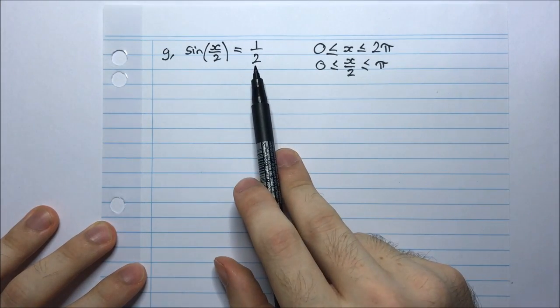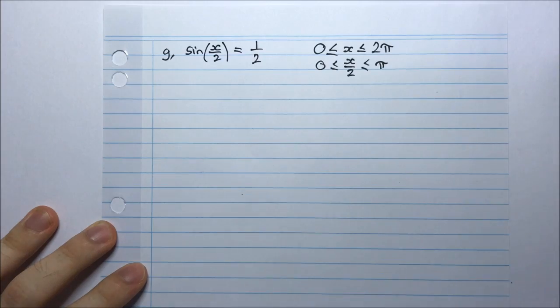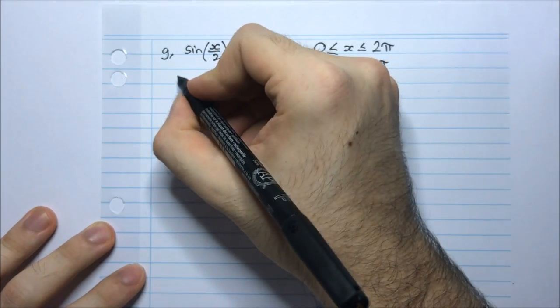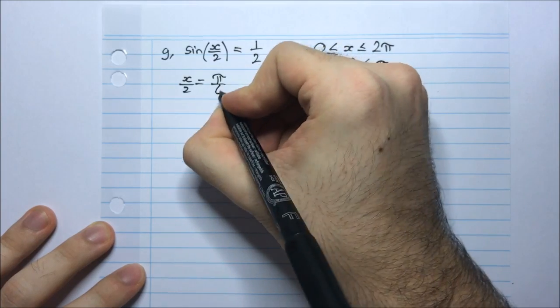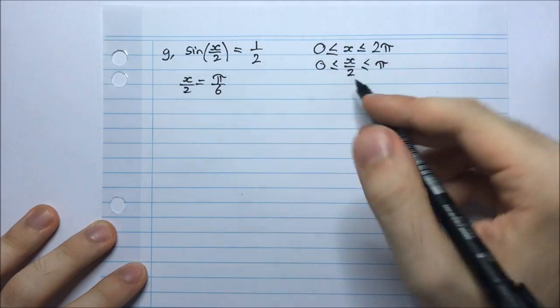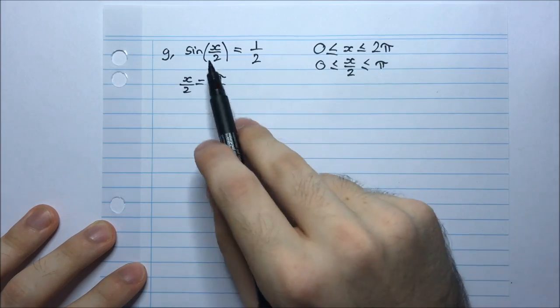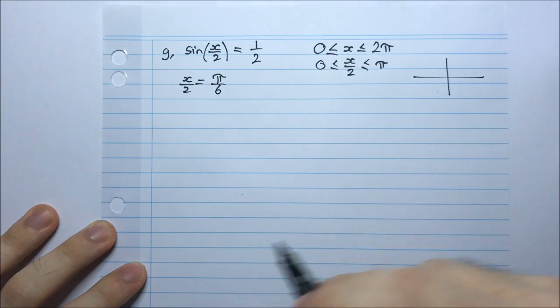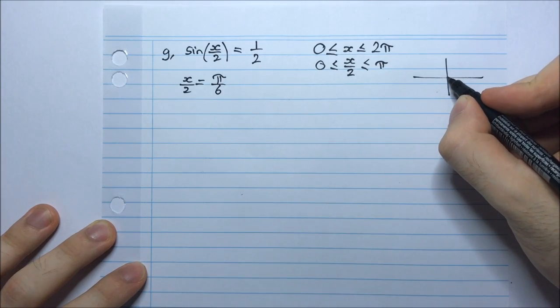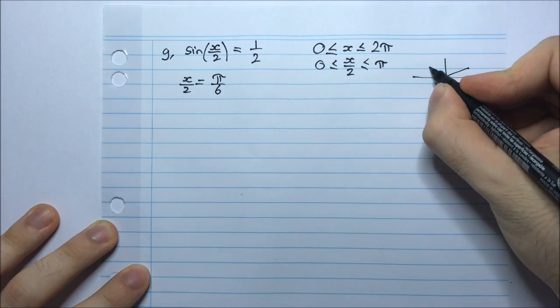Now I want to solve this thing here. So when is sin equal to 1/2? Well, we know that that's 30 degrees or π/6 radians. So x/2 = π/6. But is there any other place within 0 and π where sin is going to be 1/2?